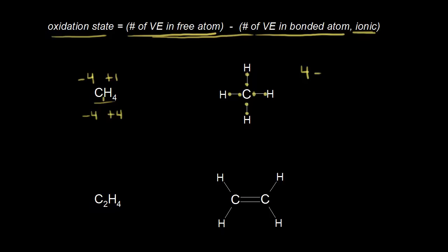We need to think about electronegativity differences, and we're comparing carbon to hydrogen. Carbon is more electronegative than hydrogen, so the two electrons in each C–H bond go to carbon — it's winner-takes-all. Carbon is now surrounded by eight electrons. So four minus eight gives us an oxidation state of minus four for carbon, confirming what we already knew.